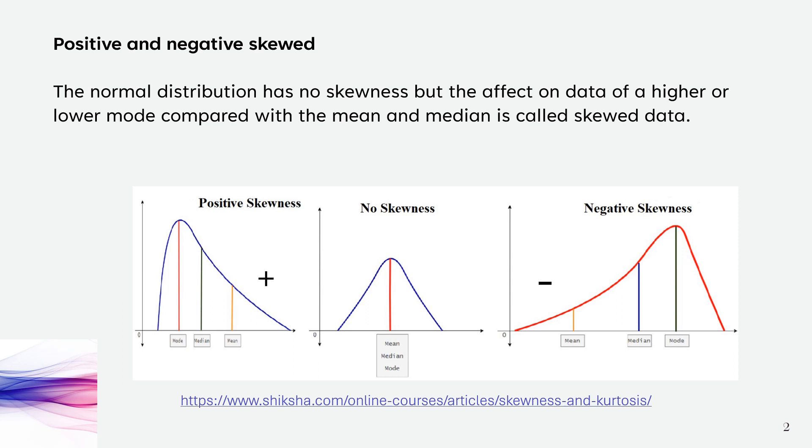The first thing we're looking at is positive and negative skewed. The normal distribution has no skewness. That means that the mean, median and mode are all in the centre, and that's our bell curve.